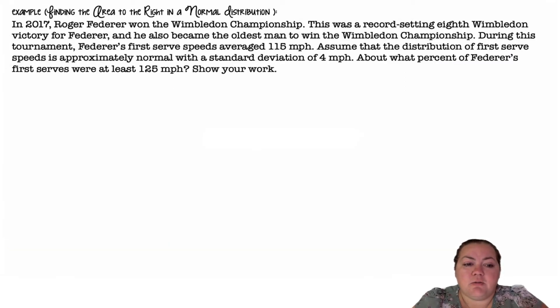Finding the area to the right in a normal distribution. In 2007, Roger Federer won the Wimbledon championship. This was a record setting eighth Wimbledon victory for Federer, and he also became the oldest man to win the Wimbledon championship. During this tournament, Federer's first serve speeds averaged 115 miles per hour. Assume that the distribution of first serve speeds is approximately normal with a standard deviation of 4 miles per hour. About what percent of Federer's first serves were at least 125 miles per hour?